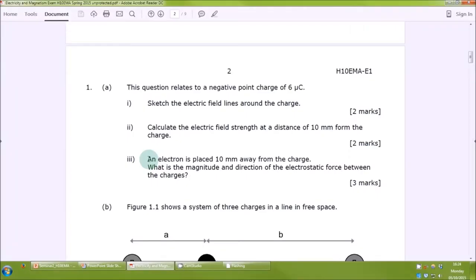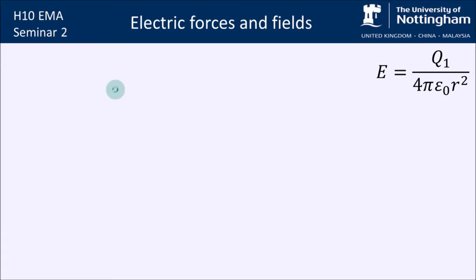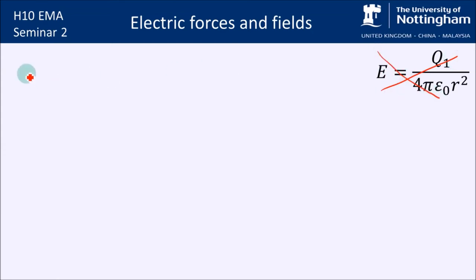Next up we're going to do part 3. An electron is placed 10 millimetres away from the charge — what is the magnitude and direction of the electrostatic force between the charges? For this we're no longer using the electric field strength equation. We're now going to use Coulomb's law.